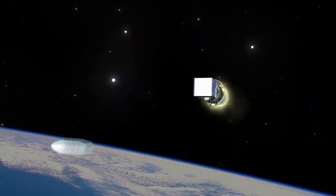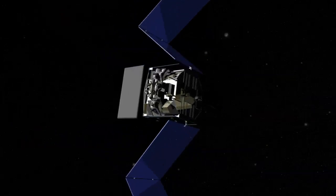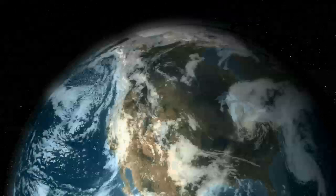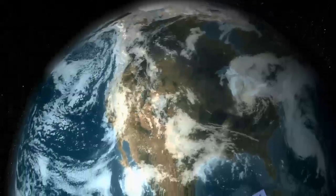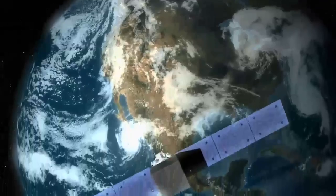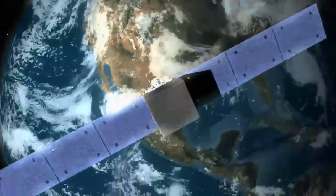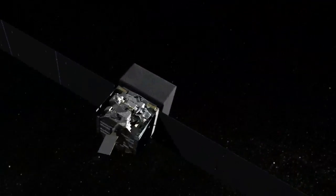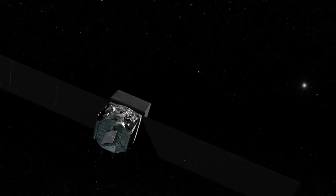For two weeks following launch, controllers carefully checked out the spacecraft's various systems. Could GLAST communicate properly? Did it know where it was pointing? Were the solar panels and batteries providing enough power? Once we knew we had a healthy spacecraft, it was time to turn on the two science instruments.